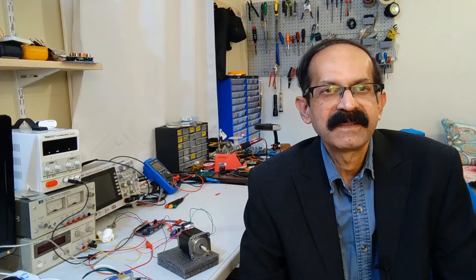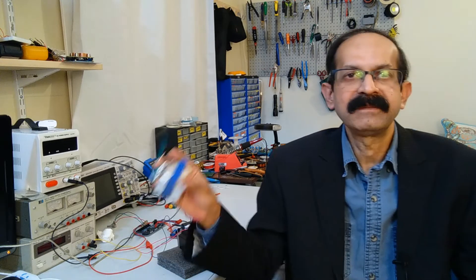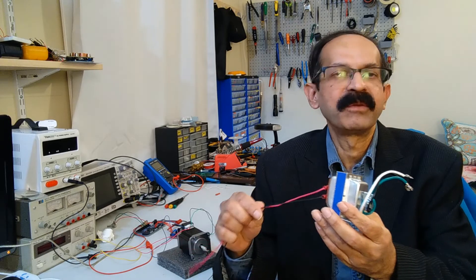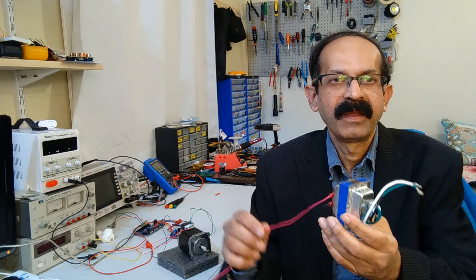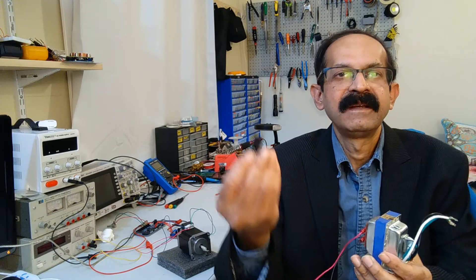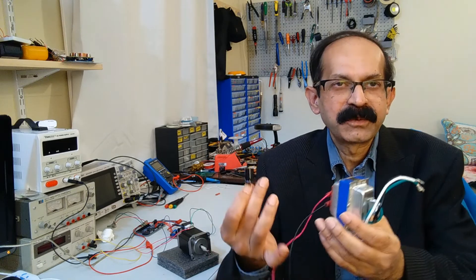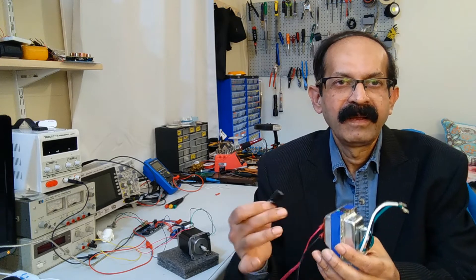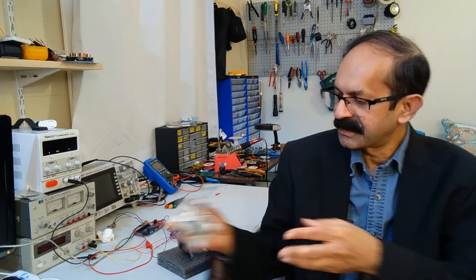All you need is a transformer like this one to reduce the AC mains voltage to much smaller voltage like 12 volt or so and a bipolar capacitor like this. So only these two components I will use to drive a stepper motor. And later, I will also show an electronic circuit.